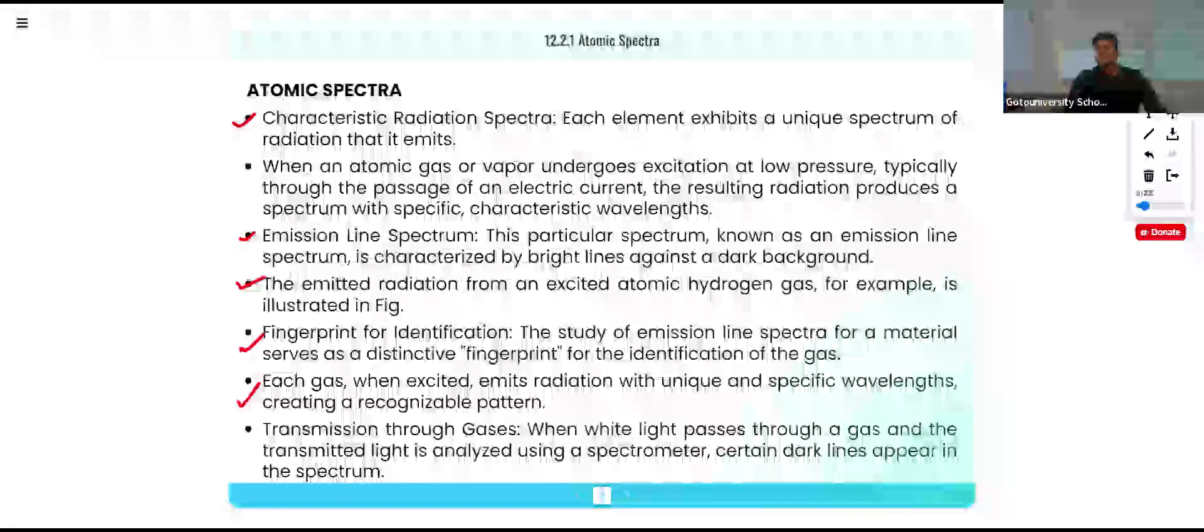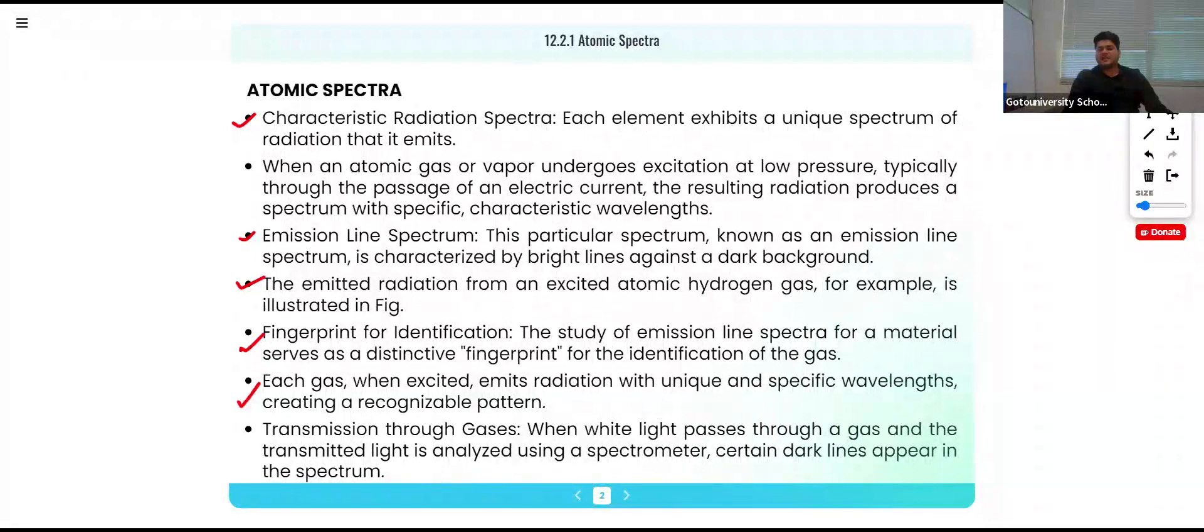Transmission through gases: when white light passes through a gas and the transmitted light is analyzed using a spectrometer, certain dark lines appear in the spectrum.